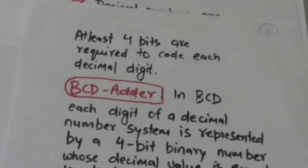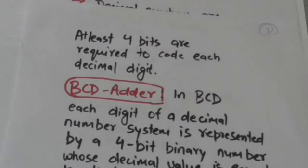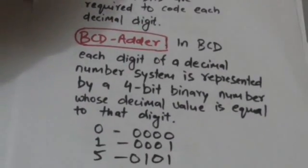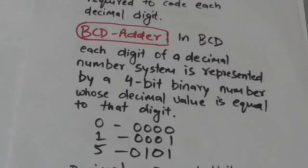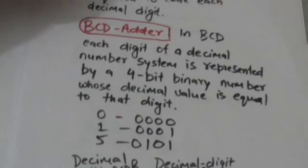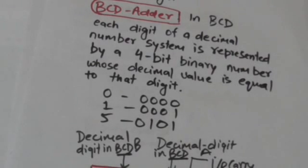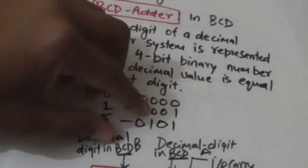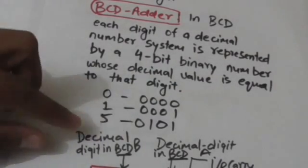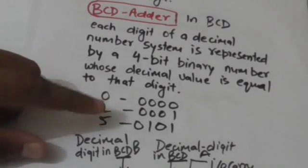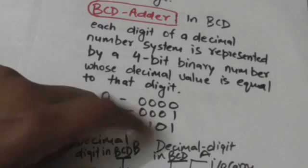Since there are 10 digits in the decimal number system, at least four bits are required to code each decimal digit. Now we will design a decimal adder — that is, a BCD adder. In BCD, each digit of a decimal number system is represented by a four-bit binary number whose decimal value is equal to that digit. For example, the decimal digit zero is represented in BCD by the four-bit binary number 0000.